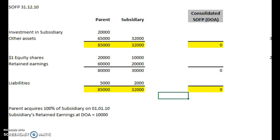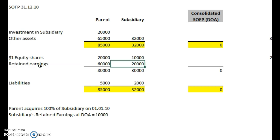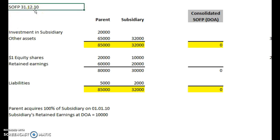This is the same as the previous example, formatted slightly differently, and we're going to show our workings on the retained earnings. In the previous example I split out the retained earnings at the date of acquisition and post-acquisition. This time it's just presented as a single balance sheet, one year after the date of acquisition — the statement of financial position at the end of year 2010. The parent acquired 100% of the subsidiary on the 1st of January 2010, so it's one year of trading.